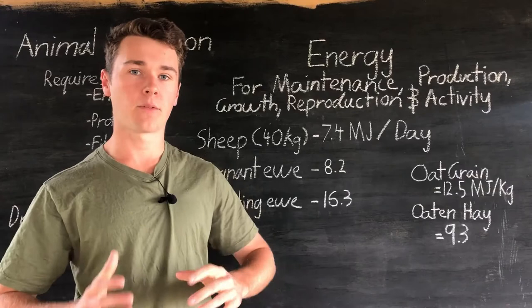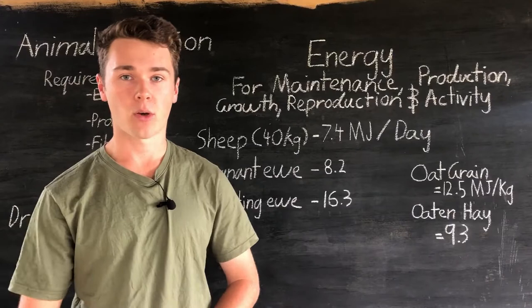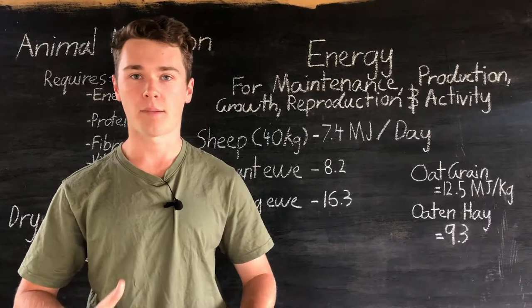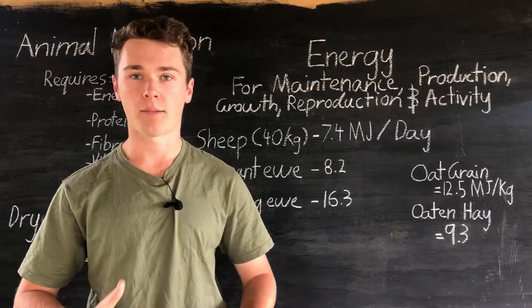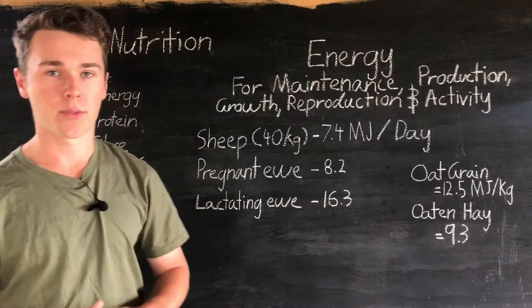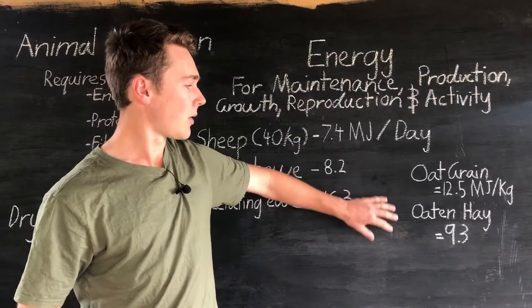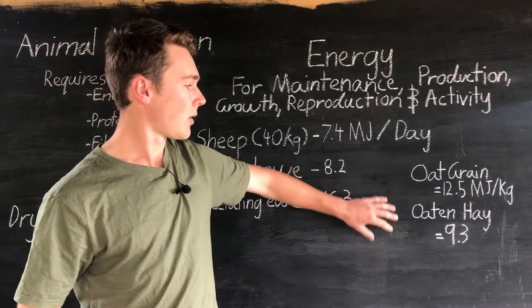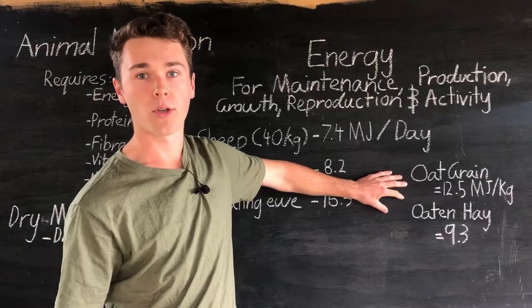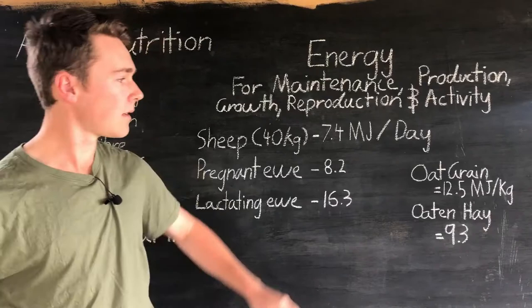Different foods provide a different amount of energy. Generally, grains and fats have a higher amount of energy, whereas hay and roughage provide less. For example, oat grain can provide 12.5 megajoules per kilo, whereas oat hay will only provide 9.3 — that's almost a 25% difference. So when factoring in cost, you have to work out how many megajoules you're going to get per dollar and how that will affect production.